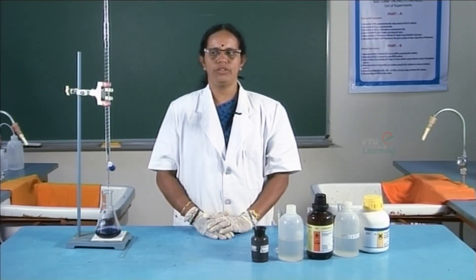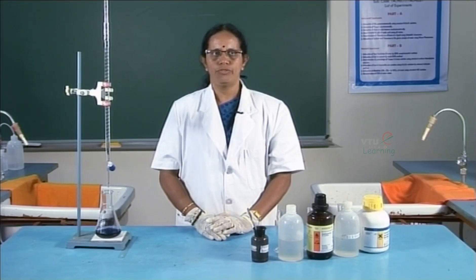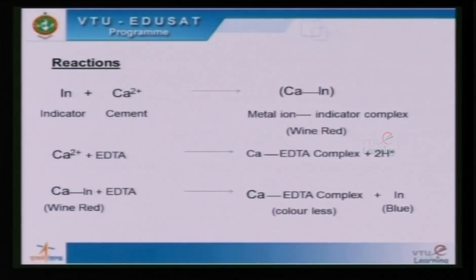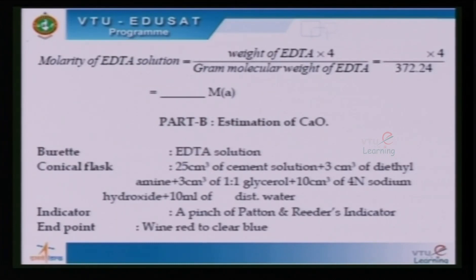The reactions involved in the experiment: the indicator forms a complex with calcium ions in cement, forming the metal ion–indicator complex which is wine red. The free calcium ions then form a complex with EDTA, releasing H⁺ ions. This brings down the pH and the pH is maintained by diethylamine. The calcium–indicator complex is finally dissociated by EDTA near the end point, releasing the free indicator, and the solution turns blue.